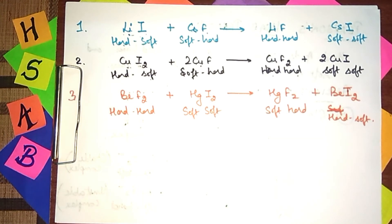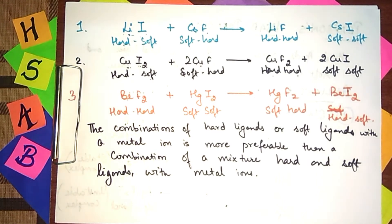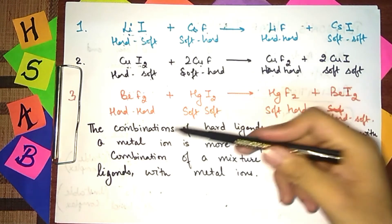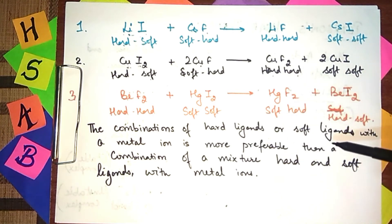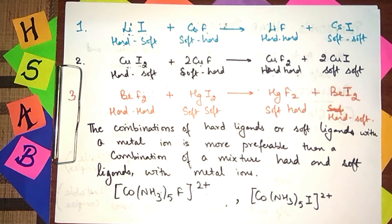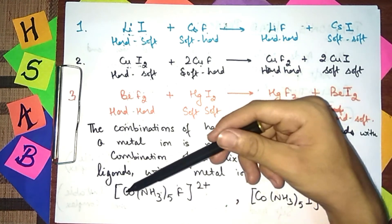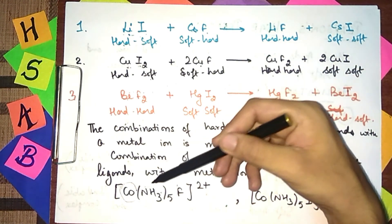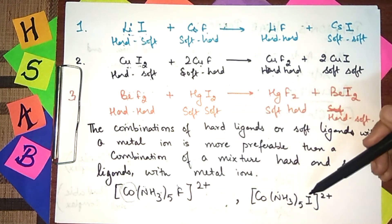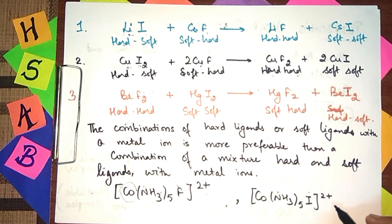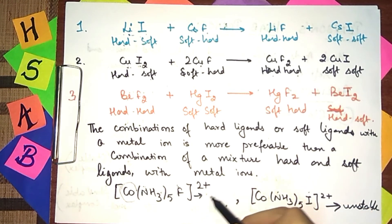Here is an important note: the combination of all-hard ligands or all-soft ligands with a metal ion is more preferable than a mixture of hard and soft ligands. For example, a complex with nitrogen (hard ligand) and iodide (soft ligand) on the same central metal ion will not be stable. It is unstable, whereas a complex with all hard or all soft ligands will be stable.